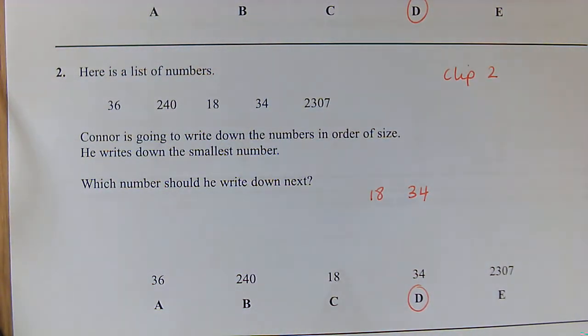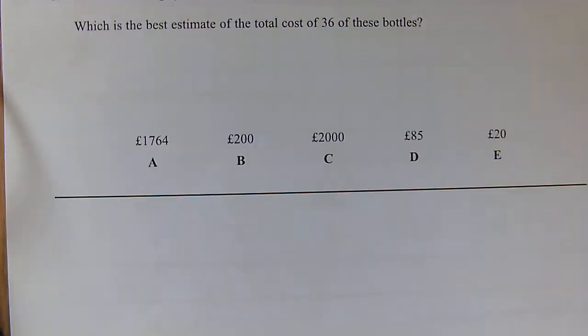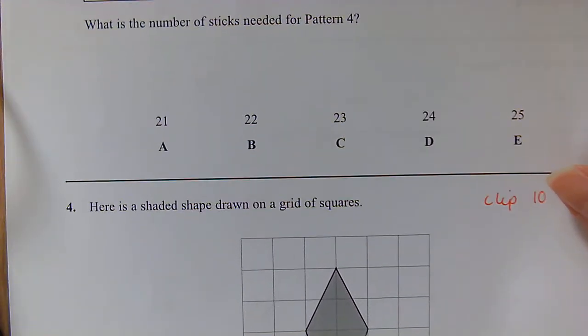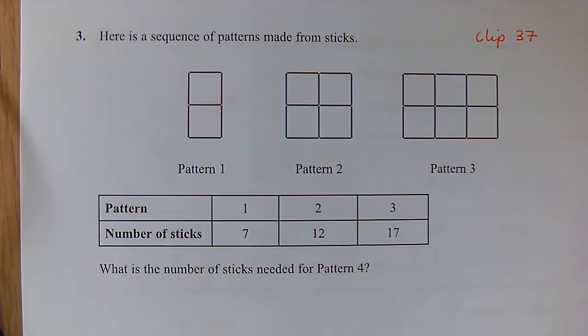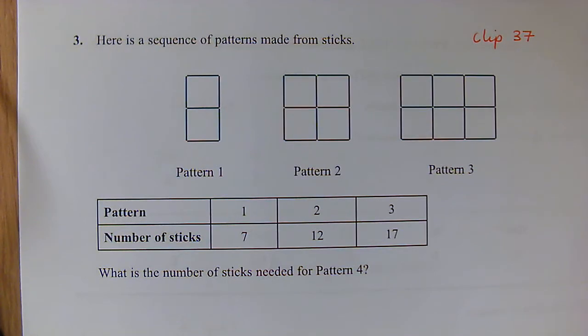Question 3: We've got a sequence here, a pattern made of sticks. I want to know what the number of sticks is for pattern number four. So here we can recognize that we are adding five each time, so our next number in the sequence would be 22.